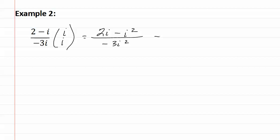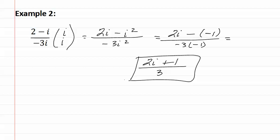Then, changing the i squareds to negative ones, we get 2i minus negative 1 over negative 3 times negative 1. This means we get 2i plus 1 over negative 3, which is our final answer.